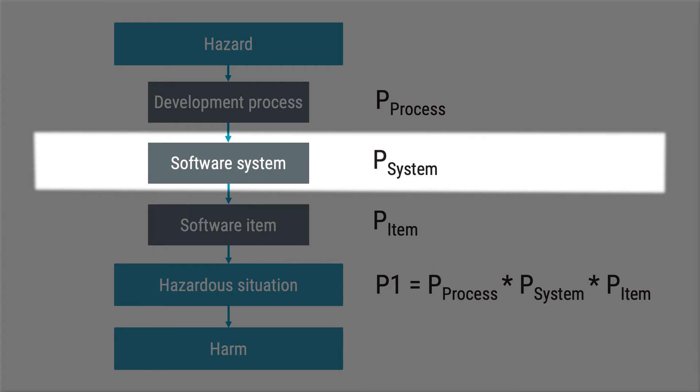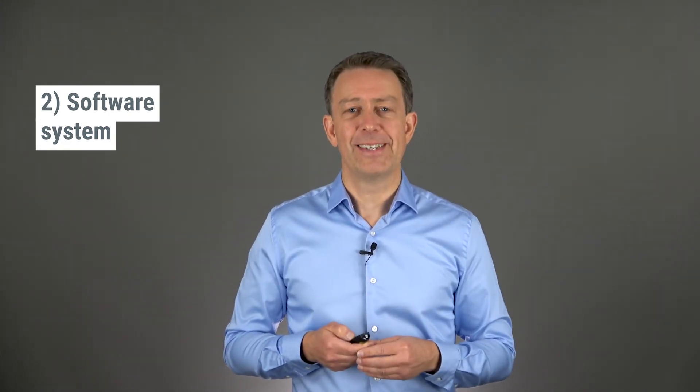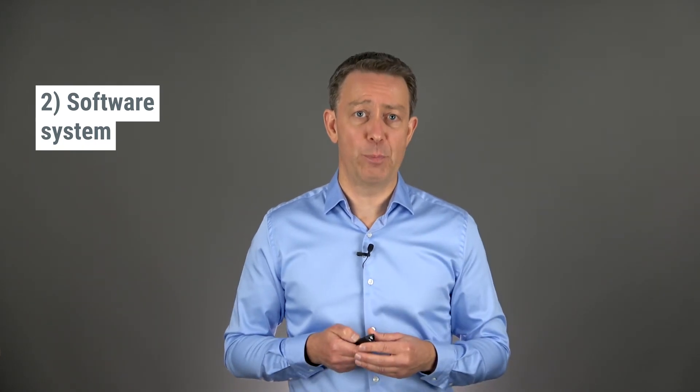Secondly, what are your options on the software system level to reduce the likelihood of software failure? Simplified, this is often related to architectural design. On a software system level, you can deal with causes which are applicable to several software items and causes. For example, if a risk is related to processing speed, then you could define system requirements assuring that you are guaranteed sufficient CPU power. This would then be a hardware requirement implementing a risk control measure on behalf of the software. You will learn more about this in other videos, especially in the architectural design, where you also find requirements about segregation necessary for risk control.